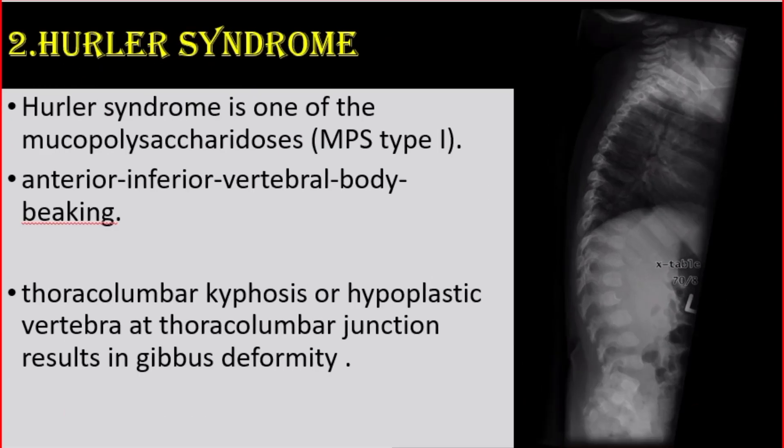Number 2: Hurler syndrome. Hurler syndrome is one of the mucopolysaccharidoses type 1, in which there is anterior-inferior vertebral body peaking and thoracolumbar kyphosis, or hypoplastic vertebra, as the thoracolumbar junction results in gibbus deformity.